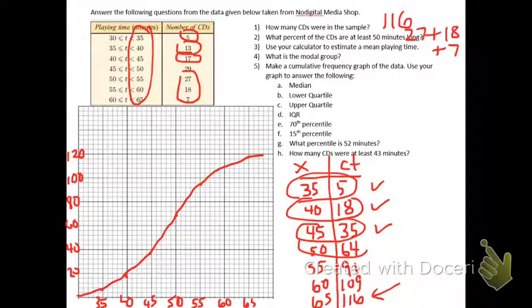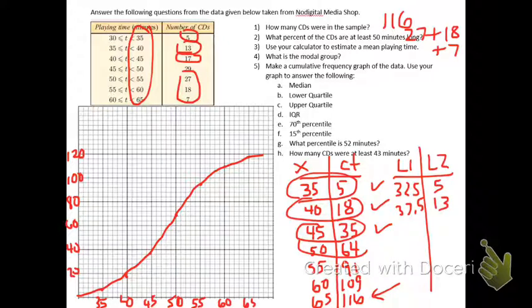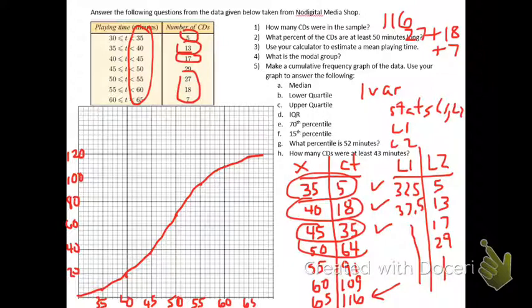Use your calculator to estimate a mean playing time. So to do that, in one list, doesn't matter what the name of it is, you want to put the midpoints of all these. It's hard to make decimal points here. And in the other, you're going to list the frequencies, not the cumulative frequencies, because I'm doing an average. So we're going to do that all the way down and you're going to do one variable stats, list one, list two. Some of you have a list one here and a frequency list two, and that will give you the estimate of the mean. I'm not going to calculate that right now. I have a graphic calculator on here.